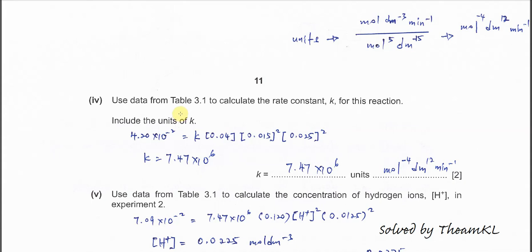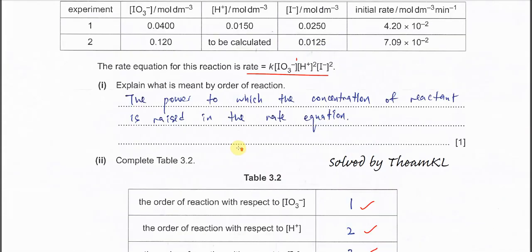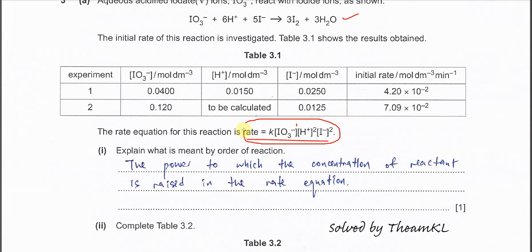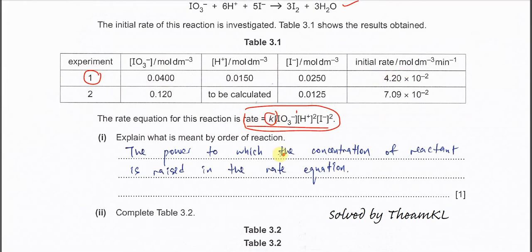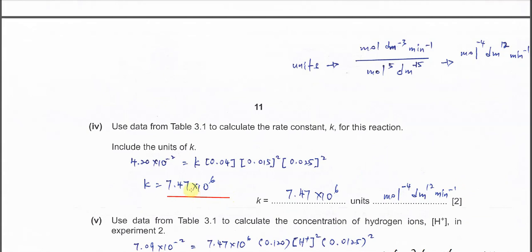Part 4: use data from table 3.1 to calculate the rate constant for this reaction. This is quite straightforward — use the rate equation given, substitute the concentrations and rate from experiment 1 into the rate equation, and solve for k. You should get k = 7.47 × 10⁶.